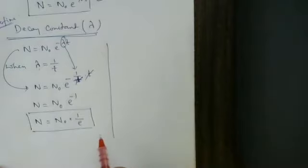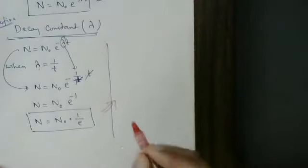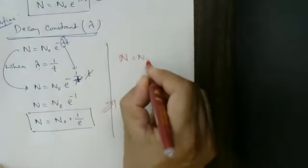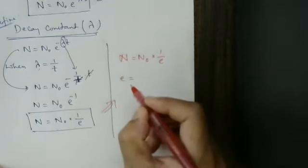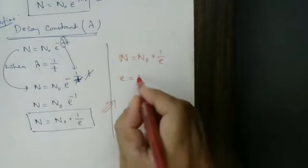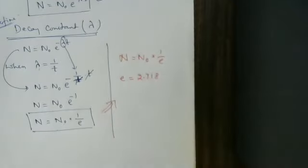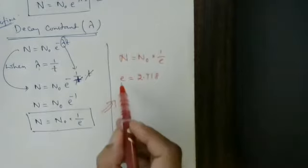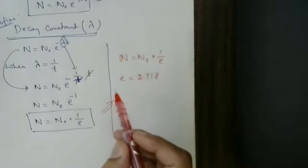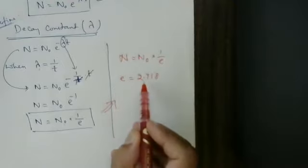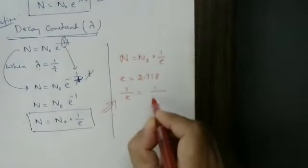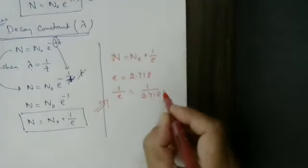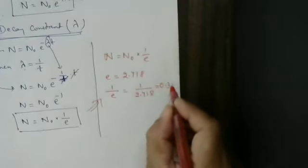Another concept, useful for your NEET or CET examinations. This is equal to N₀ times 1/e. The value of e is equal to 2.718 — this is the exponential value. Therefore, 1/e equals 1 divided by 2.718, and this value is equal to 0.368.